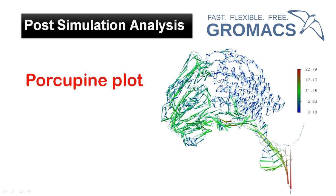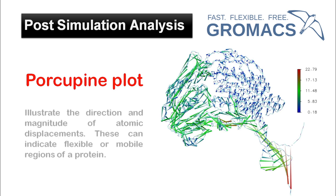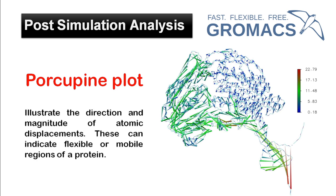We can get this kind of plot from the PCA axis. Large or key movements are captured along the principal component axis. Basically, the porcupine plot explains the direction and magnitude of the movement of the backbone, or the flexible region of the protein.